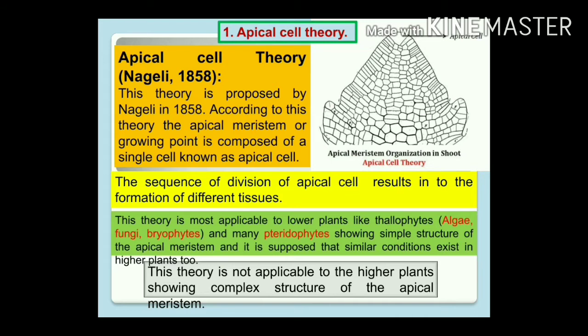The apical cell theory was proposed by Hoffmeister and supported by Nageli in 1858. According to Nageli and Hoffmeister, the apical meristem is composed of a single apical cell. This view is only applicable to bryophytes, some pteridophytes, and some higher algae.